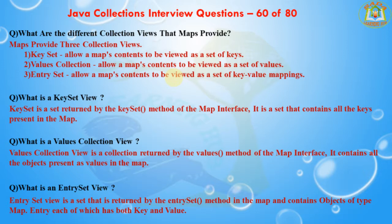What is the entrySet view? EntrySet view is the set returned by the entrySet method of the Map, and it contains objects of type Map.Entry, each of which has both a key and a value. To summarize, the three map views are: keySet — a collection of all keys; values — a collection of all values in the map; and entrySet — a collection of key-value pairs.